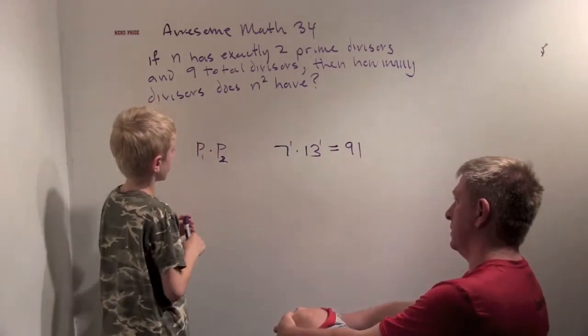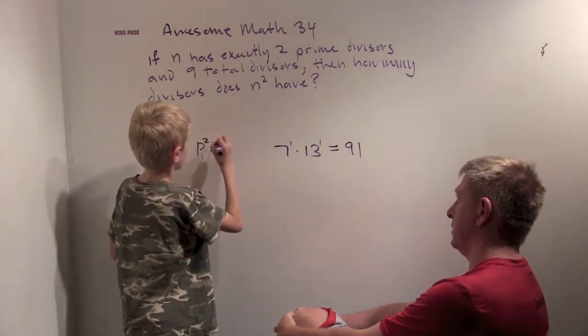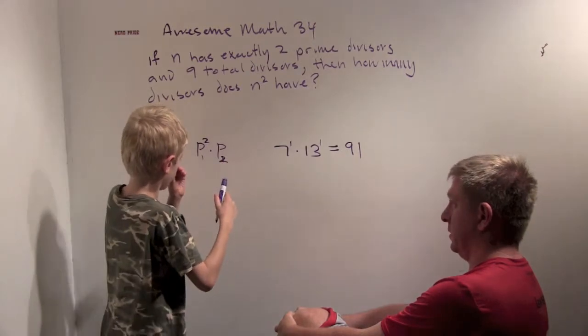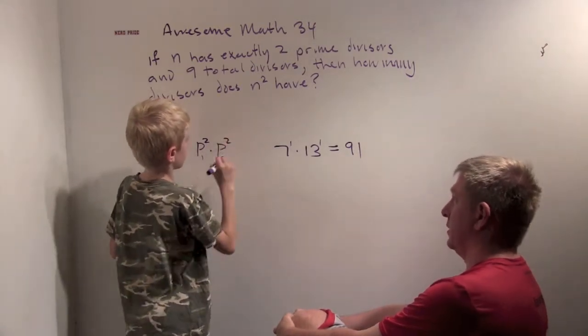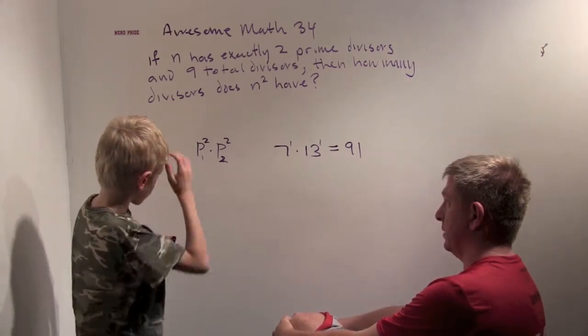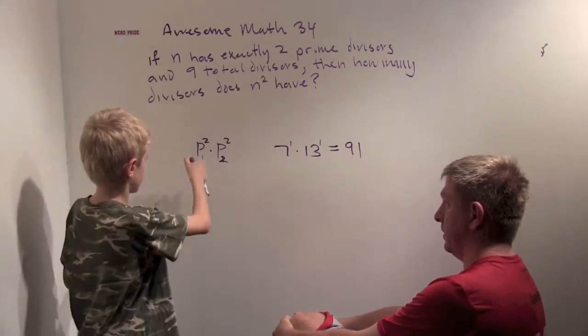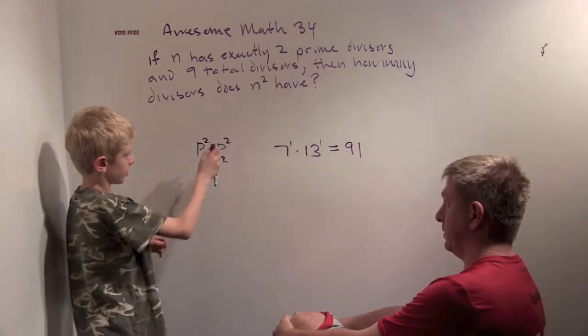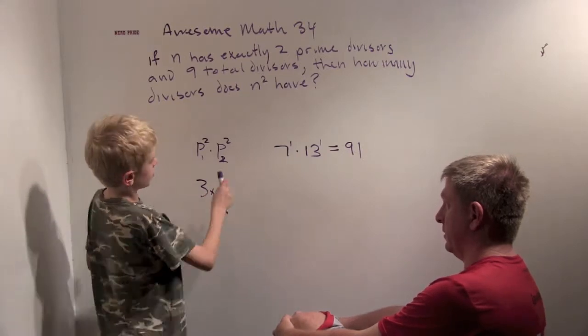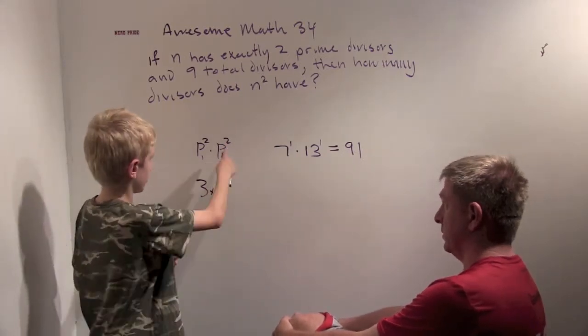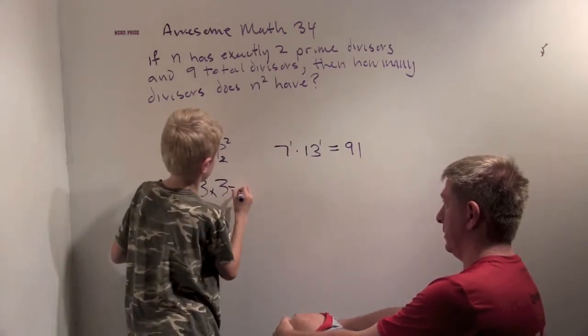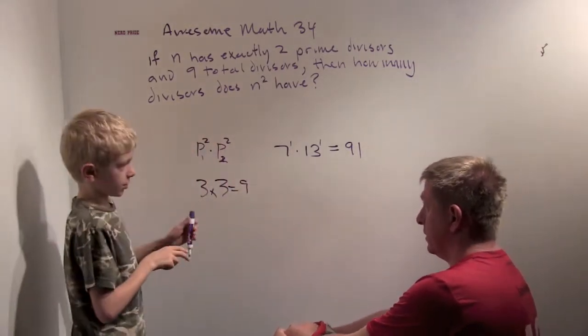We need to have 9 divisors. Well, if we make prime 1 squared and prime 2 squared, we have prime 1 to the 0, prime 1 to the 1, prime 1 to the 2. This is 3 choices, times prime 2 to the 0, prime 2 to the 1, prime 2 to the 2. So 3 times 3. This is 9 divisors.